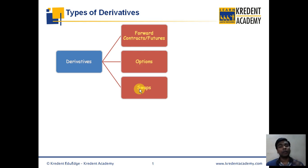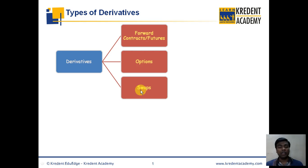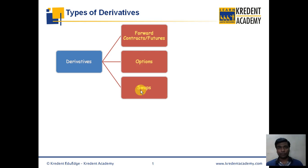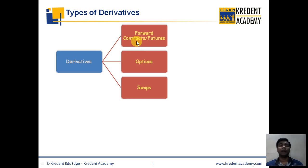Over the course of this lecture series, we are going to understand two financial derivatives: forward contracts or futures, and options. We won't go much into swaps, and as a retail investor in India you cannot really participate in the swaps market anyway. So what you can participate in as a retail investor in Indian financial markets will be either futures or options.